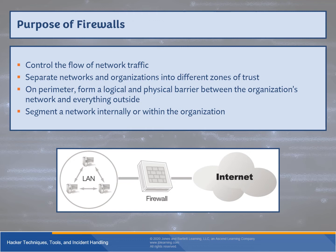A firewall controls the flow of network traffic — it's a rule set determining whether a particular packet meets the criteria for entry. Firewalls separate networks into different zones of trust and define the network perimeter. Additional internal layers can incorporate firewalls for defense in depth. However, multiple firewall layers need careful logical design; firewalls double-checking each other can create conflicts where the first firewall's behavior triggers anomalous-activity alerts in the second.